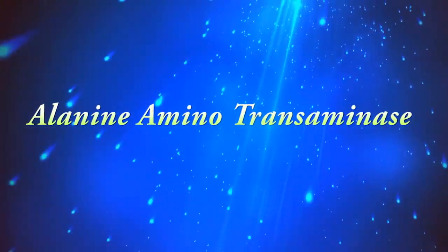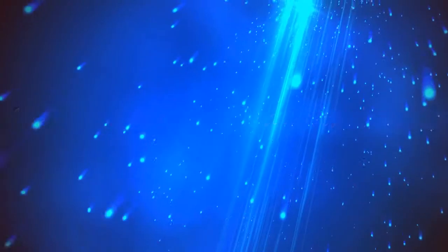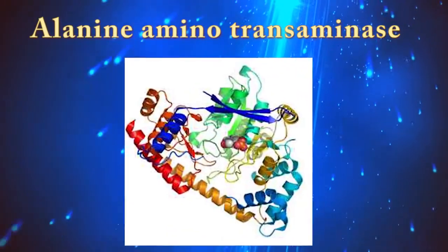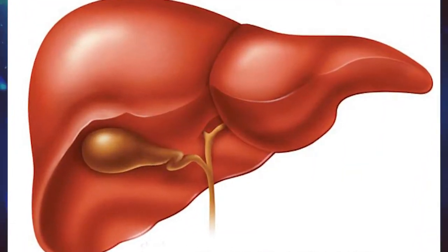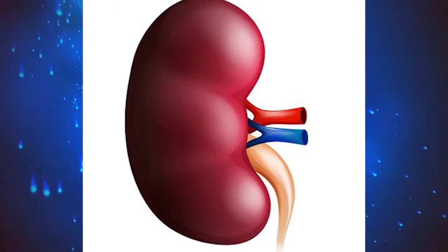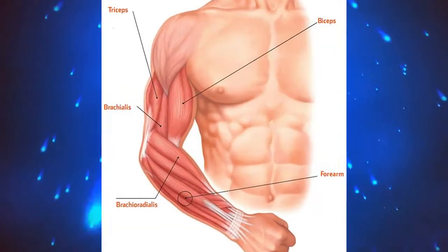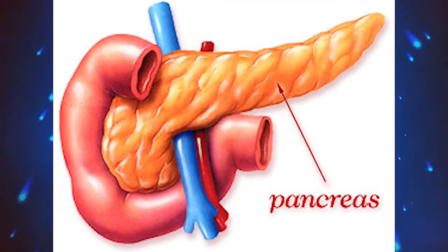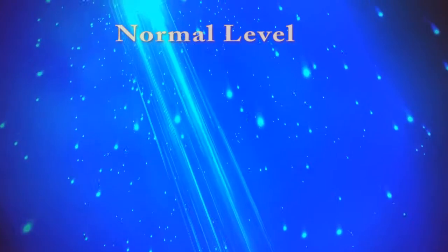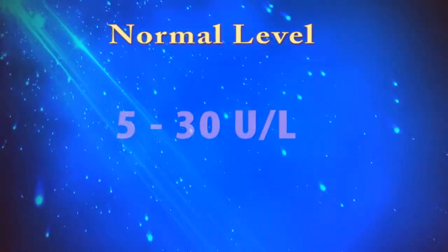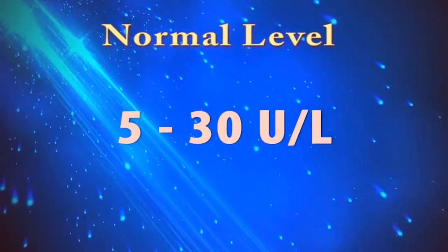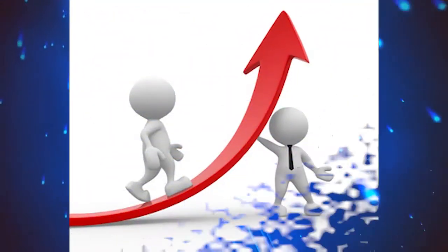Alanine Aminotransferase enzyme — formerly called serum glutamate pyruvate transaminase — is mainly produced in the liver, with small amounts also produced in the kidney, heart, muscles, and pancreas. The normal serum Alanine Aminotransferase level is 5 to 30 units per liter.